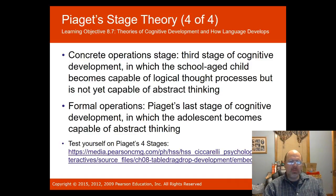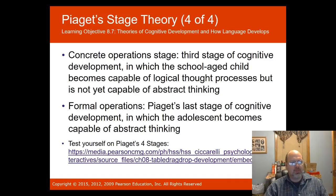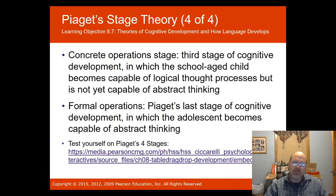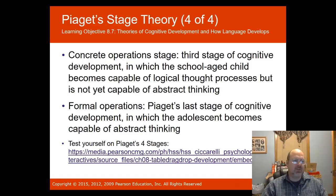The concrete operations stage is the third stage of development, in which a school-aged child becomes capable of logical thought processes but is not yet capable of formal abstract thinking. Piaget's final stage of cognitive development is formal operations, where the adolescent becomes capable of abstract thinking. This relativistic thinking is often fostered in college, where old black-and-white thinking is challenged with new problems that cannot be solved with pure logic.